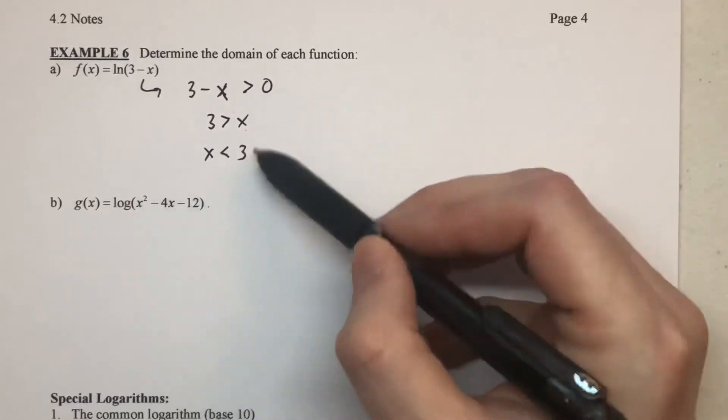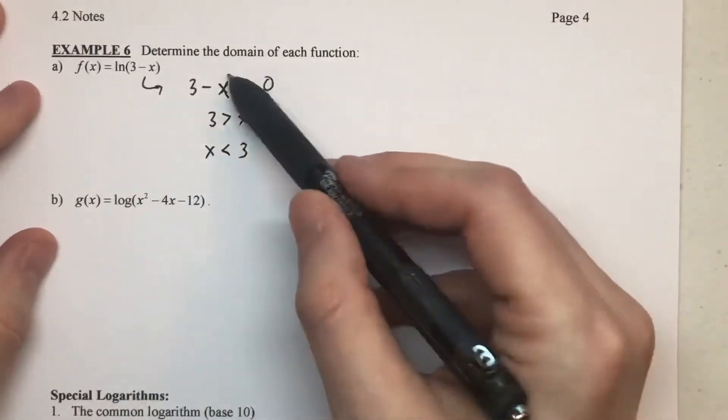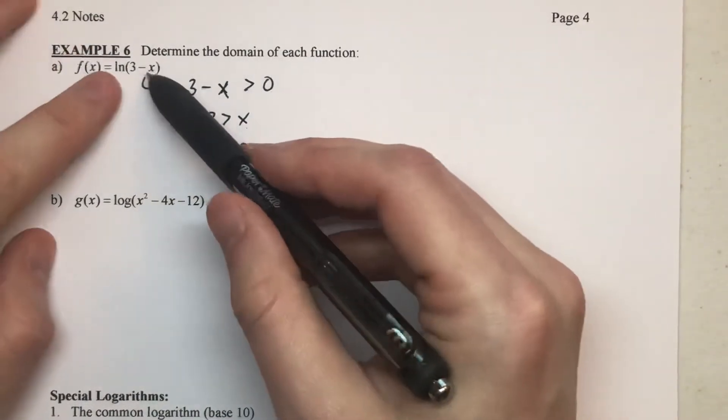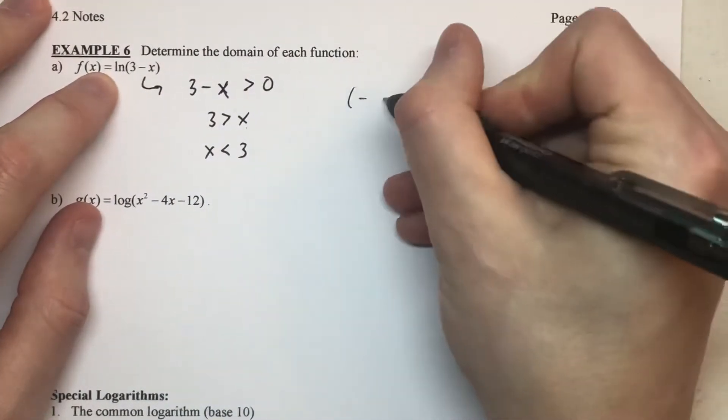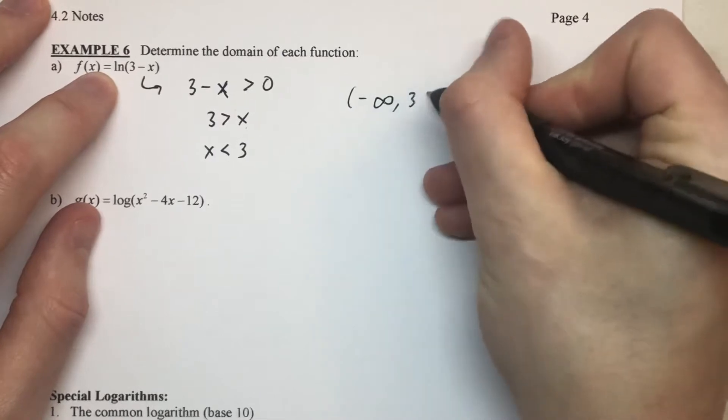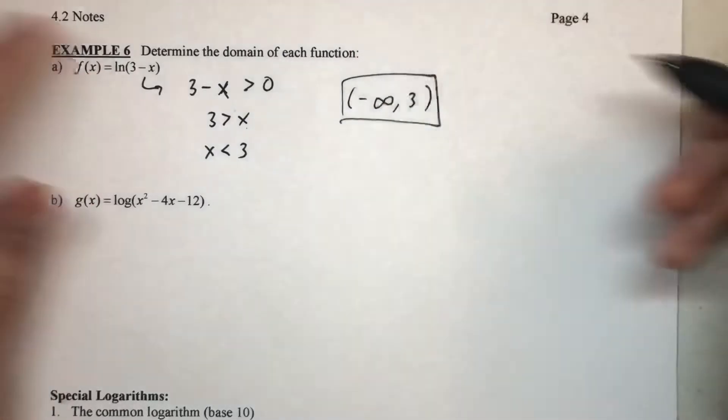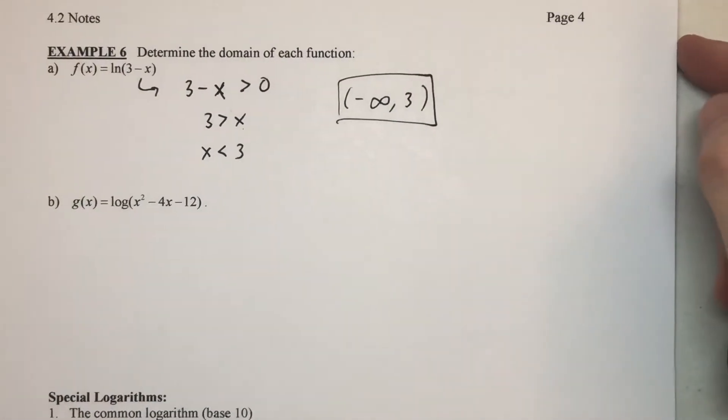That right there is telling you the values of x that would make this true, which means it's the values of x you could plug in there. So x is less than three would be all the negative numbers up to three but not including it. And there would be our interval notation for that domain.